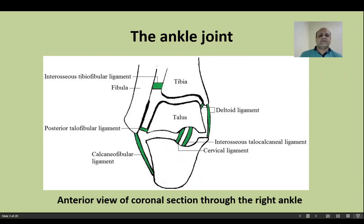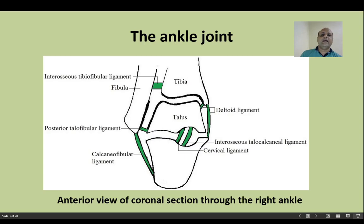You need to practice and draw this diagram in the examination if you get a note on the ankle joint. The diagram shows the articular surfaces and the ligaments: the medial ligament called the deltoid ligament, the components of the lateral ligament, the interosseous tibiofibular ligament joining tibia and fibula, and the interosseous talocalcaneal ligament and cervical ligament joining the tarsus to the calcaneum.